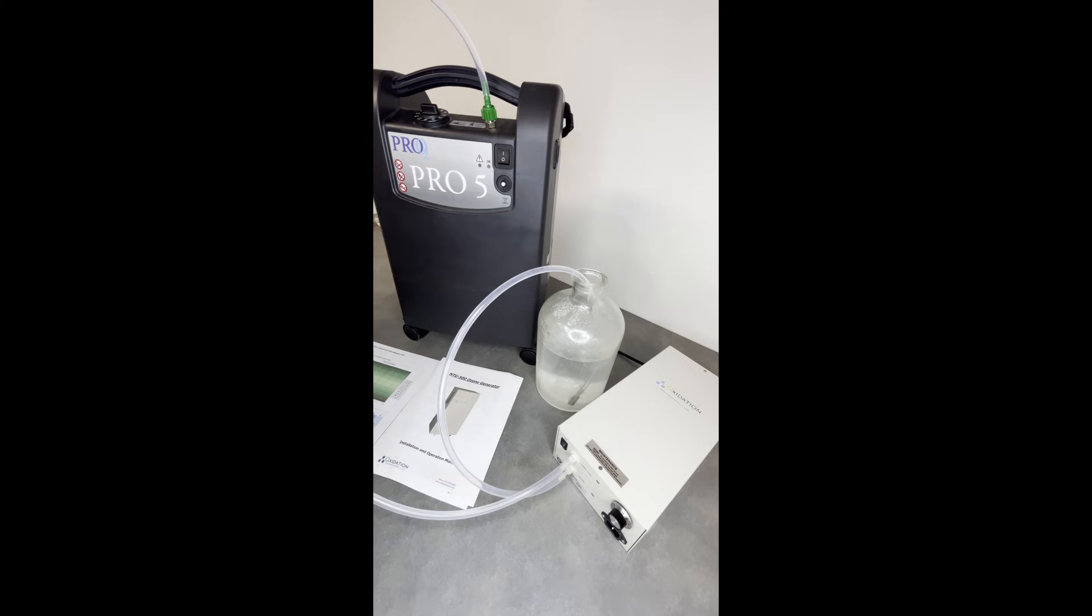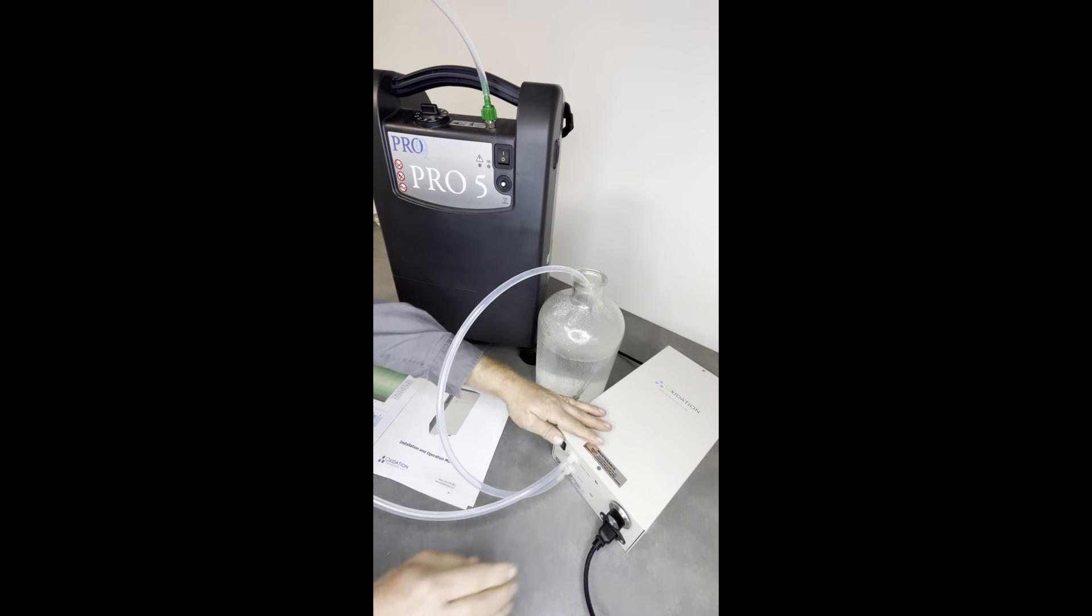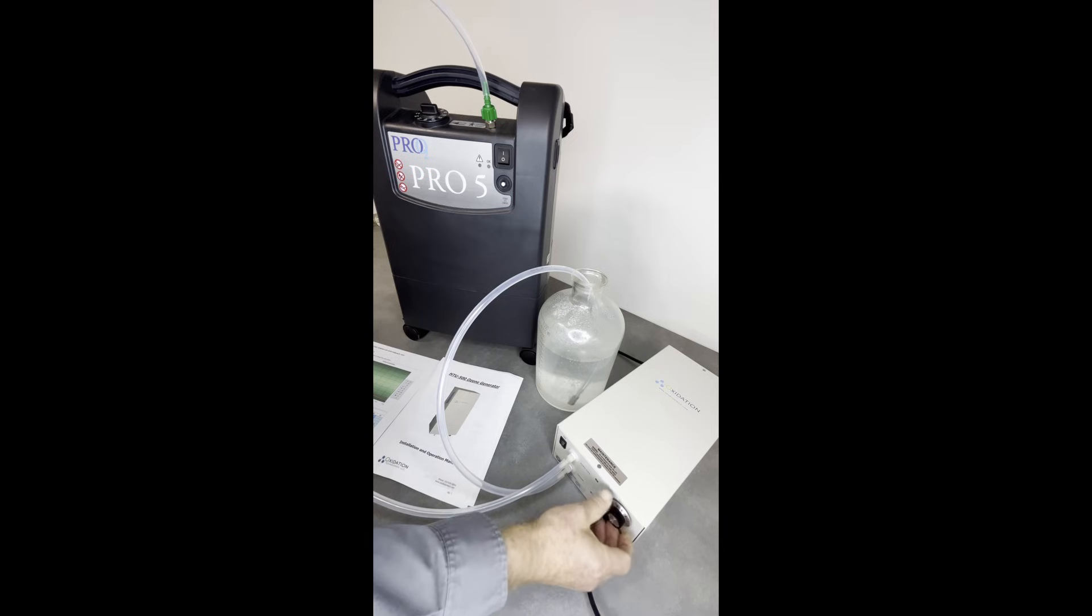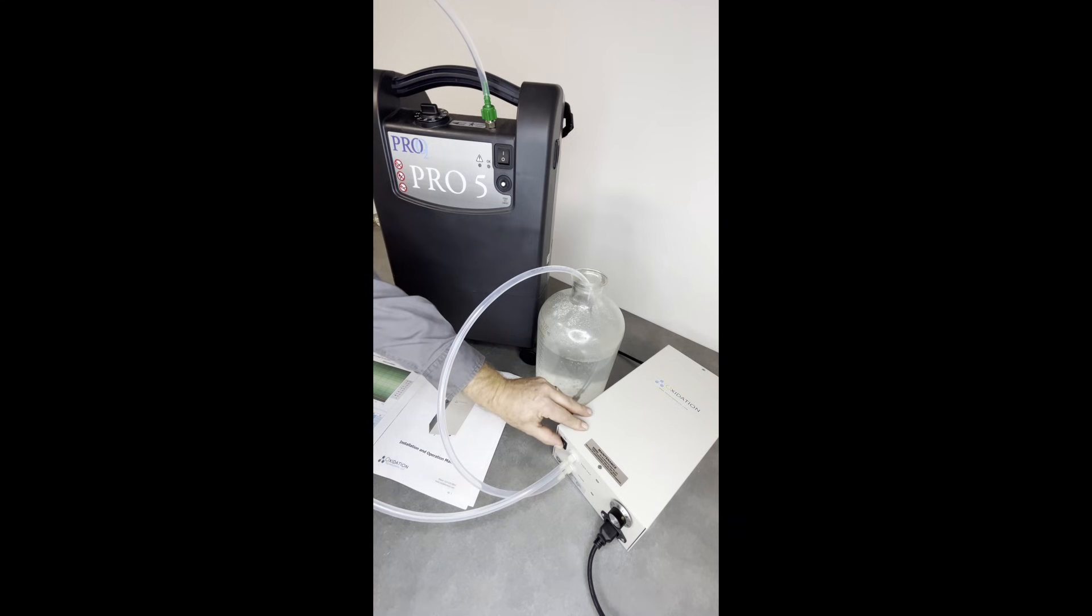Alright, so this HTU 500 ozone generator, I do need to plug the cord in. So that plugs right in here. This dial here is going to be the power level of the ozone generator. It goes from one all the way up to 10. We'll just start at a low power level first, turn the unit on.